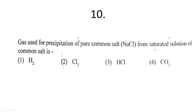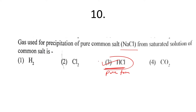The tenth question: the gas used for precipitation of pure common salt from a saturated solution of common salt. This works through the common ion effect. The gas is HCl — students should note that in its pure form HCl is a gas. So option three is correct.